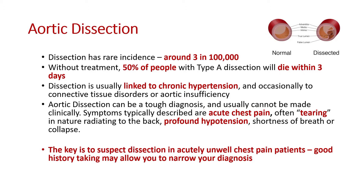The diagram shows a normal artery with a proper lumen lined by the tunica intima. On the right you can see there's been a split in the tunica intima, allowing blood to escape between the intima and the tunica media, creating a false lumen — this weakens the vessel significantly.